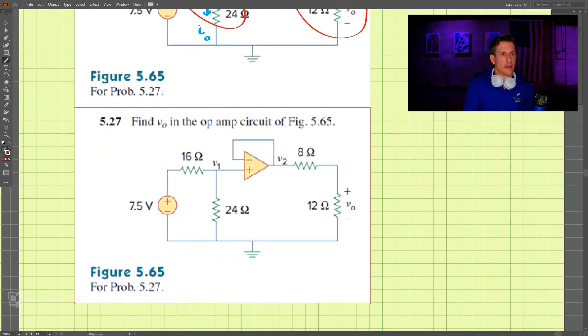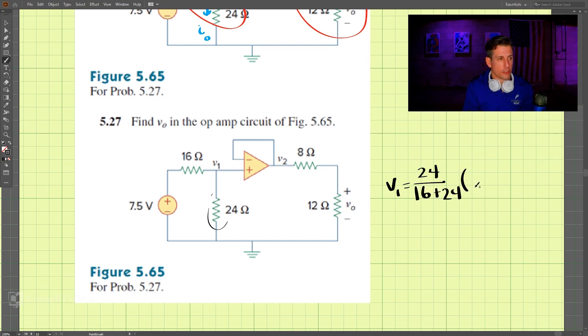So we have a voltage follower, series and series. If we take a look at v1 here, since these are in series, v1 is equal to this resistor 24 divided by both of these added together, 16 plus 24, multiplied by our source here which is 7.5 volts. So v1 comes out to be 4.5 volts.